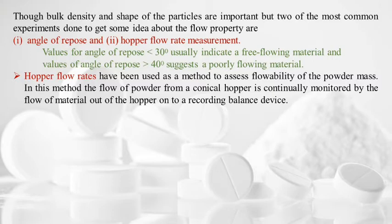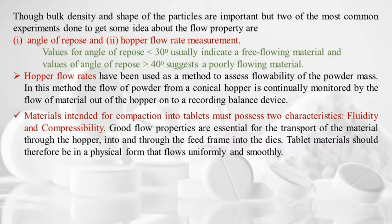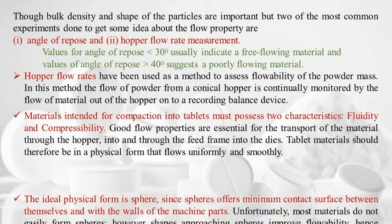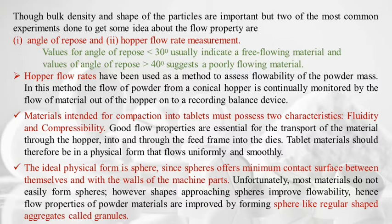Material intended for compaction into tablets must possess two important characteristics: fluidity and compressibility. Good flow properties are essential for transport of material through the hopper, feed frame, and into the dies. Tablet material should be in a physical form that flows uniformly and smoothly. The ideal physical form is a sphere since it offers minimum contact surface; since most materials do not easily form spheres, sphere-like regular shaped aggregates — granules — are formed to improve flow.